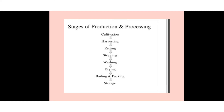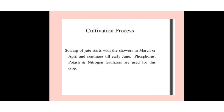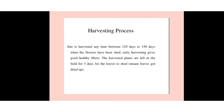The various stages of producing and processing jute are: cultivation, harvesting, retting, stripping, washing, drying, balling and packing, and storage. In cultivation, sowing occurs from March or April continuing till early June, using phosphorus and nitrogen fertilizers.